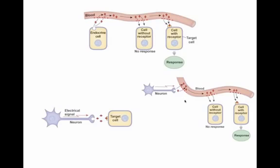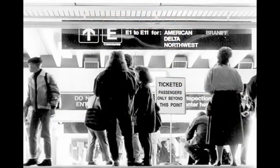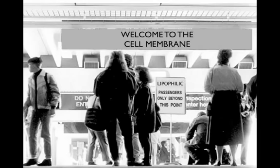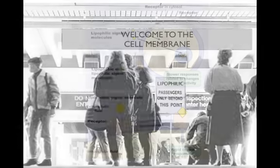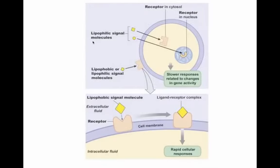So all of these things involve the concept of signal transduction — getting a message across a cell membrane, very much like at an airport where if you have a ticket, you can cross that point; if you don't, you've got to stay on the outside. So if you think about the cell membrane as the barrier, things that are lipophilic can cross. We're going to divide all different types of signaling molecules into whether or not they are lipid-loving or lipid-fearing, because the cell membrane is made of lipids.